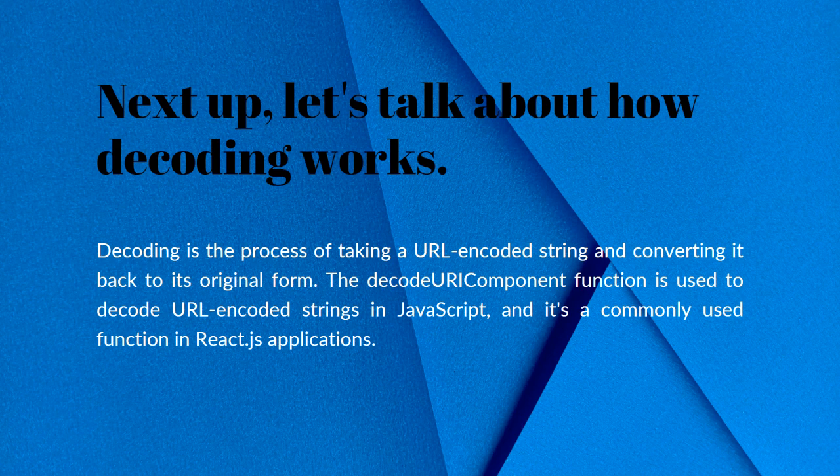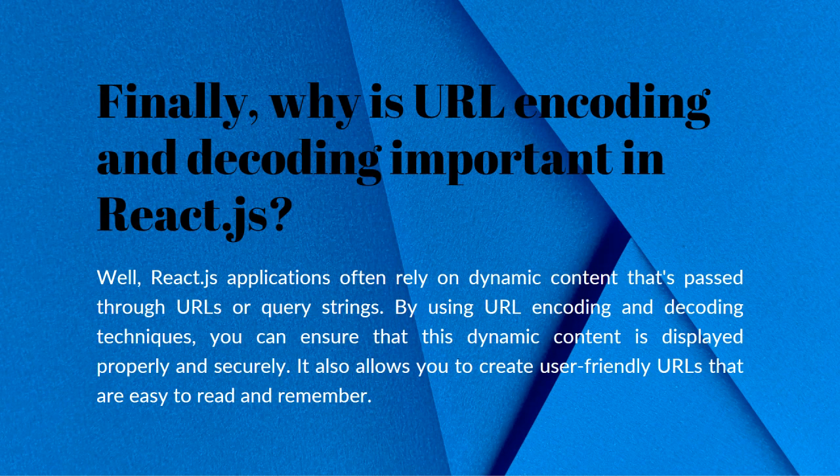Decoding is the process of taking a URL encoded string and converting it back to its original form. The decodeURIComponent function is used to decode URL encoded strings in JavaScript, and it's a commonly used function in React.js applications. React.js applications often rely on dynamic content passed through URLs or query strings, so URL encoding and decoding is important.